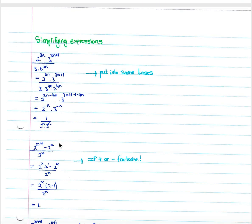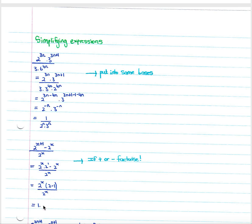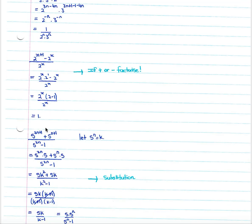When we have exponents with the same base connected by addition or subtraction, we need to factorize by finding a common factor between the terms. We can see the common factor is two to the x, so we break two to the (x plus one) into two to the x times two, then take out the two to the x. This leaves (two minus one) over two to the x; those cancel and we get one.